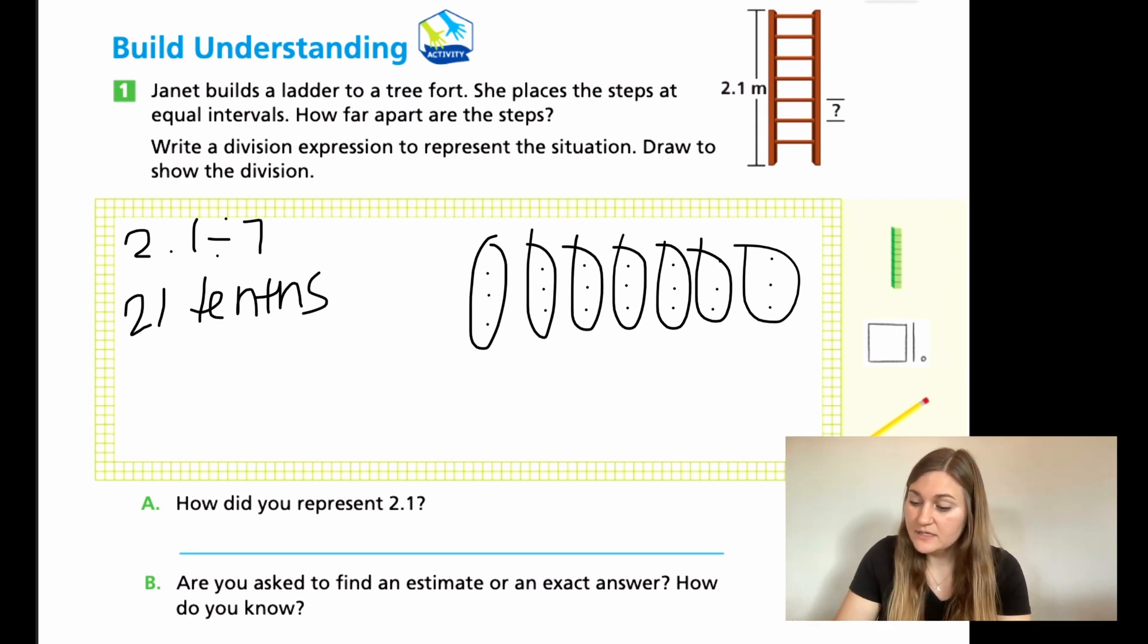So for A, how did I represent 2.1? Well, I could do this as 2.1. I took my 2.1 and I turned it into 21 tenths.